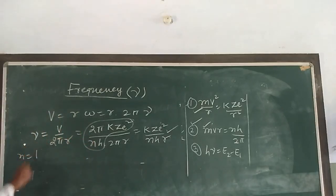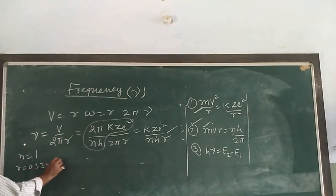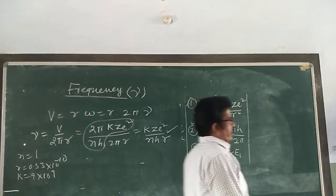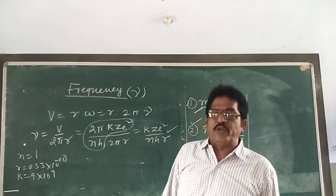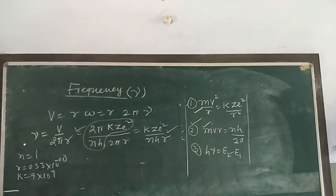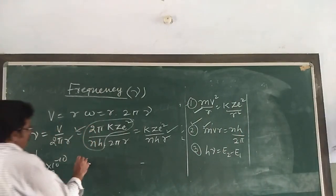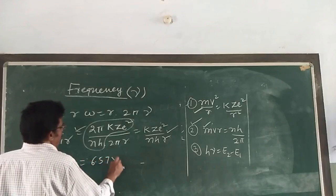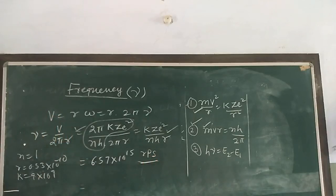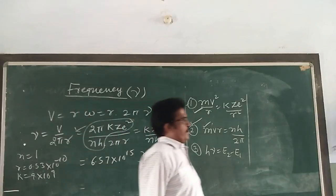Putting n = 1, radius = 0.53×10⁻¹⁰ m, k = 9×10⁹, h = 6.6×10⁻³⁴, and e = 1.6×10⁻¹⁹, then the frequency comes out to be 6.57×10¹⁵ rotations per second (rps).